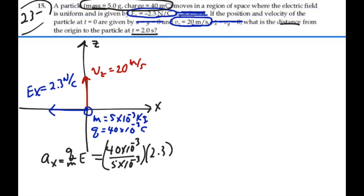We're just trying to find the magnitude here. 10 to the minus 3 cancels out, so that's 8 times 2.3 or 18.4 meters per second squared.